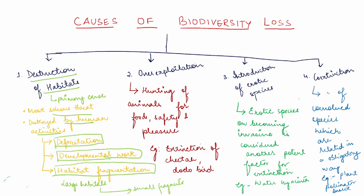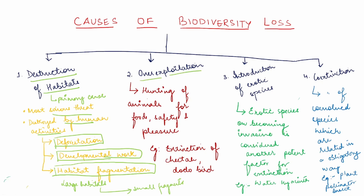Coming to over-exploitation — what is it? It is basically hunting of animals for food, safety, and pleasure. Large-scale destruction of wildlife occurred with the use of fire as a means of hunting. Excessive hunting has caused the extinction of the cheetah and also the Dodo bird, which is a unique bird of Mauritius.